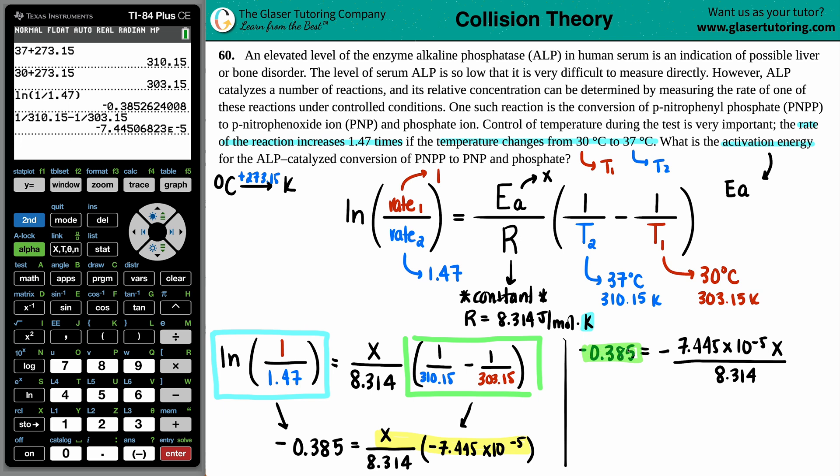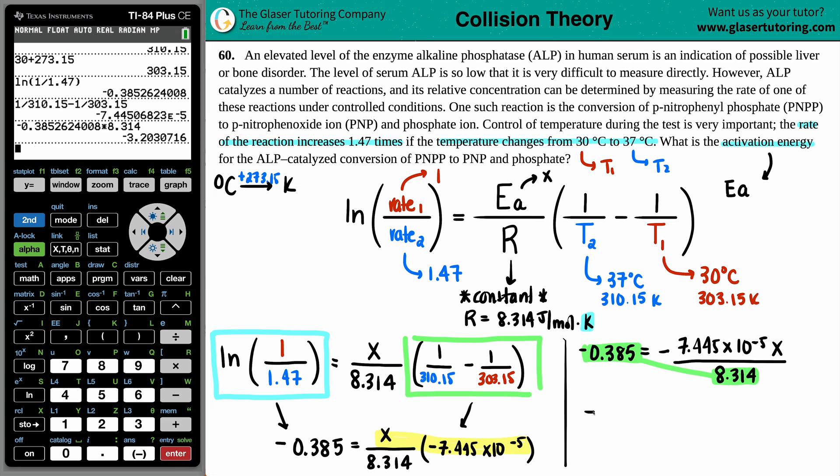Now we just cross multiply. This times this. We're just getting x by itself. So I'm going to take this value and times it by 8.314. And we get negative 3.203 equals negative 7.445 times 10 to the negative fifth x.